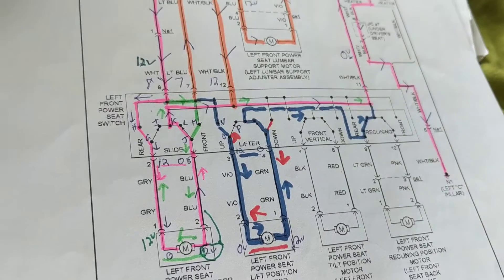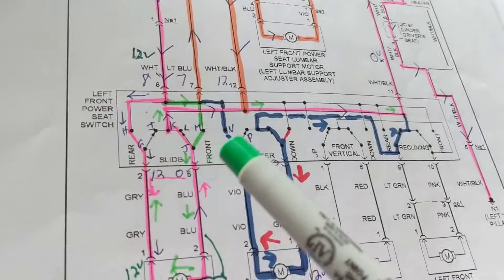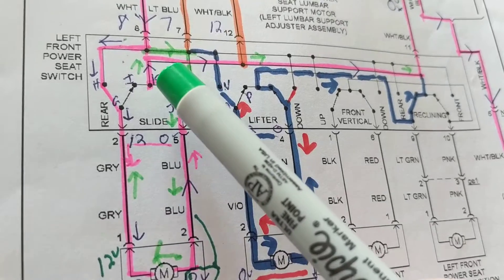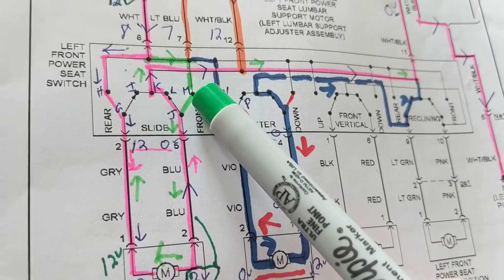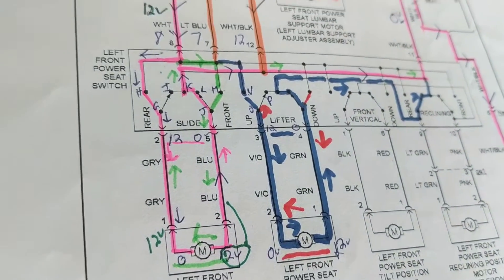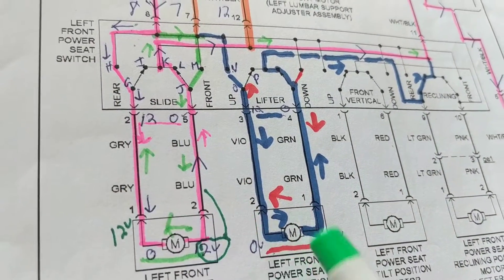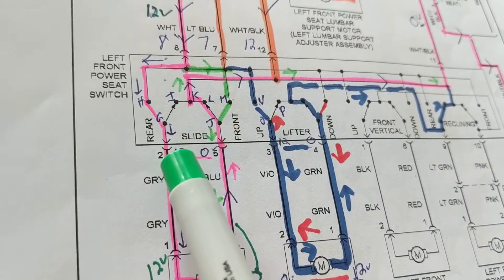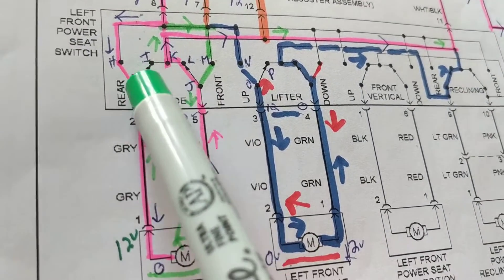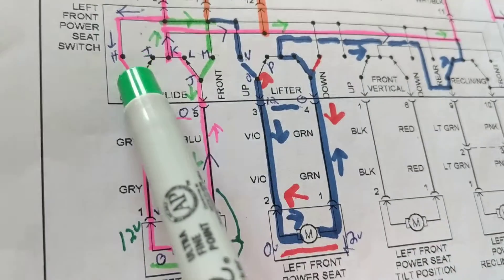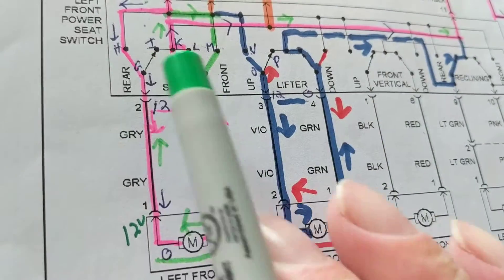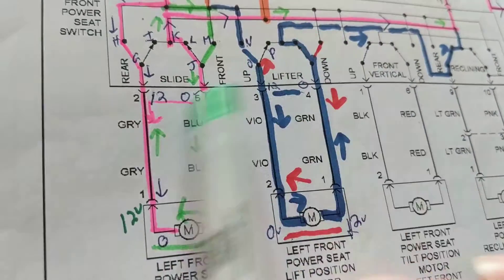Now let's say I want to slide forward. We just activated this switch from J-L to J-M, and this one is going G to I. One switch is at rest and one is activated. You have to know the correct position of the switch — if you don't know the right position, it'll throw you off completely. That's the hard part.